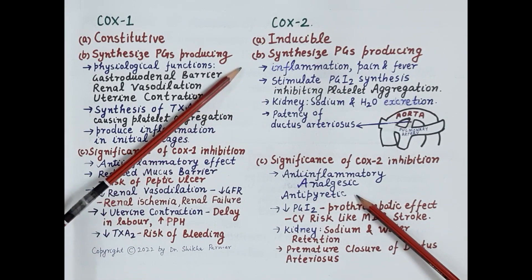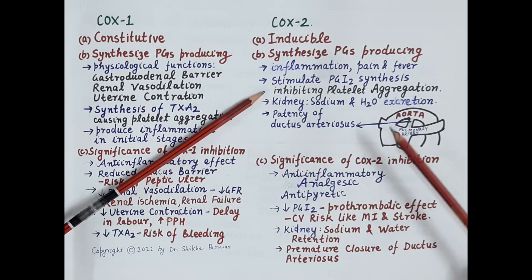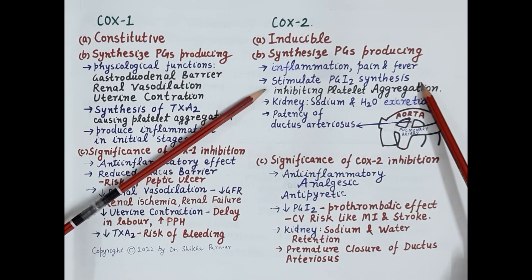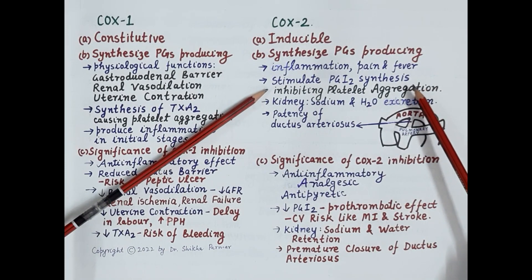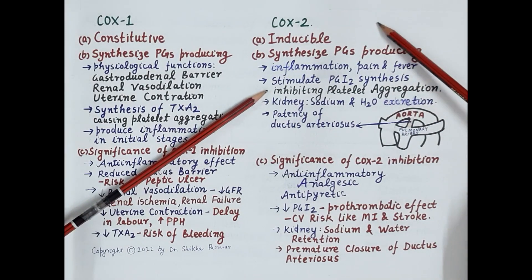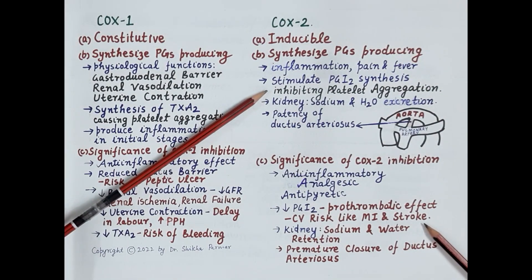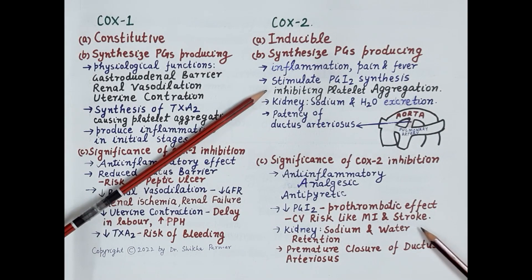On the other hand, if COX-2 is inhibited, it produces anti-inflammatory, analgesic, and antipyretic actions. However, inhibition of prostacyclin (PGI2) synthesis by blocking COX-2 produces a prothrombotic effect, and this increases the risk of myocardial infarction and stroke — one of the most important side effects of selective COX-2 inhibitors.